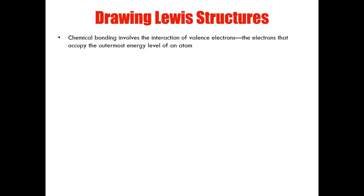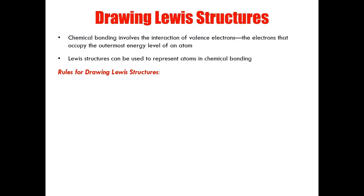Let's begin by discussing why the drawing of Lewis structures are so important. Chemical bonding involves the interaction of valence electrons. These are the electrons that occupy the outermost energy level of an atom. Lewis structures were created to represent the atoms in chemical bonding. There are four specific rules for drawing out Lewis structures, or what we call Lewis dot diagrams.